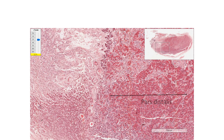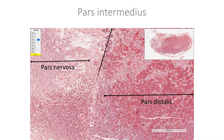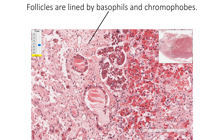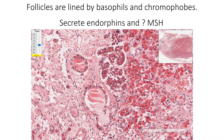Pars intermedius is located between the pars distalis and the pars nervosa. It shows colloid-filled follicles, and the exact content of the colloid is largely unknown. These follicles are lined by basophil cells as well as chromophobe cells. The basophil cells secrete endorphins and possibly melanocyte-stimulating hormone in humans.